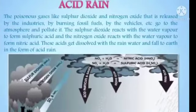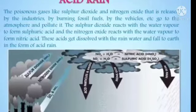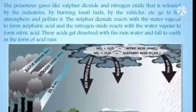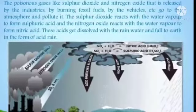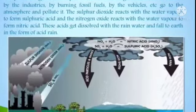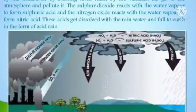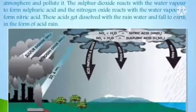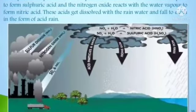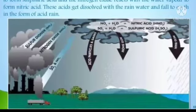Acid rain is formed when poisonous gases like sulfur dioxide and nitrogen oxide, released by industries through burning fossil fuels and by vehicles, go into the atmosphere. Sulfur dioxide reacts with water vapor to form sulfuric acid, and nitrogen oxide reacts with water vapor to form nitric acid. These acids dissolve in rainwater and fall to earth in the form of acid rain.